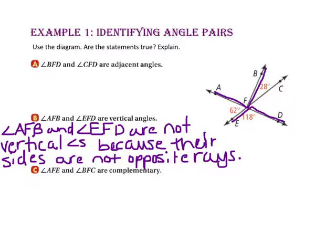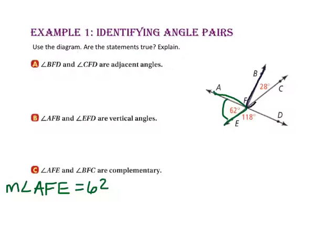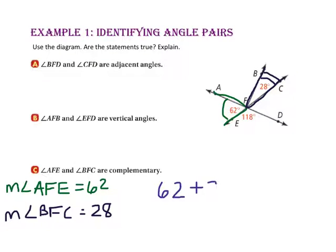Let's take a look at part C, which says angle AFE and angle BFC are complementary. Angle AFE has a measure of 62 degrees and angle BFC has a measure of 28 degrees. In order for two angles to be complementary, their measures must sum to 90 degrees. Since 62 plus 28 equals 90, these two angles are complementary.